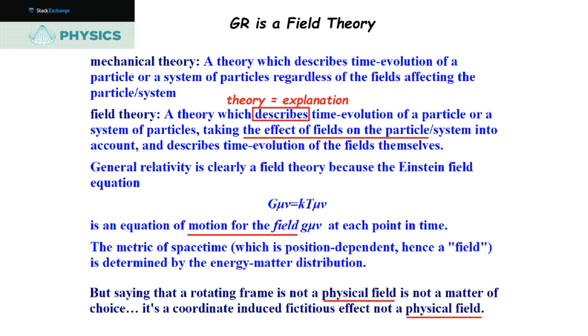A rotating frame is not a physical field — it's a coordinate-induced fictitious effect, not a physical field. What is a physical field? Field is a concept; it's always been a concept. These people talk about 'physical fields' and get tangled in their own semantics. They say fields are physical — whatever that means. Physical means it can bring down a wall? A concept called a field, a region — is that what a field is, just a region of numbers?